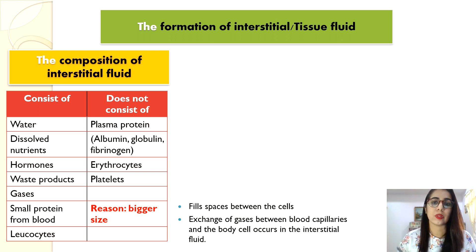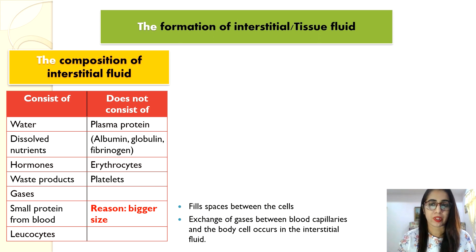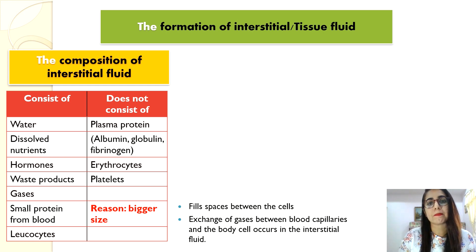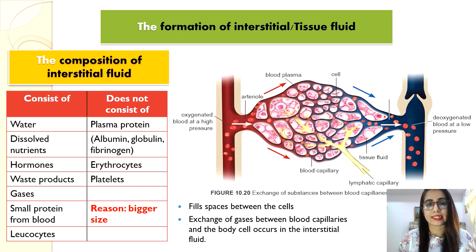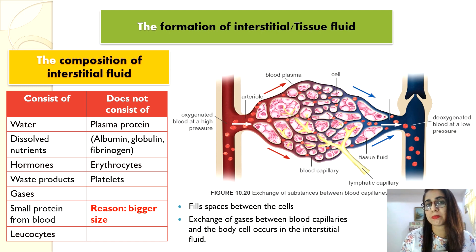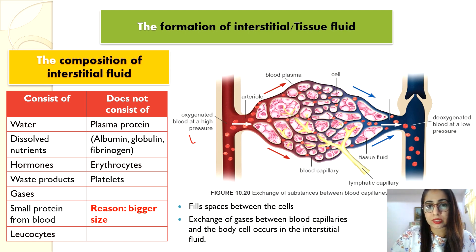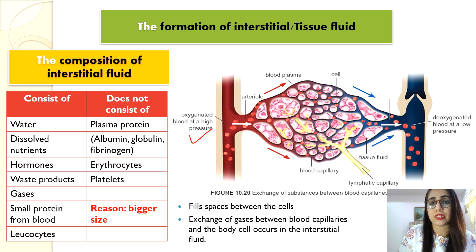Now let's look at the formation of interstitial fluid, or tissue fluid as it is called in your textbook. Arterial blood — the oxygenated blood — enters the blood capillary under high pressure. From the arterial end, oxygenated blood is at high pressure. This high hydrostatic pressure is produced from the pumping force of the heart and the high resistance of the constricted blood capillaries.